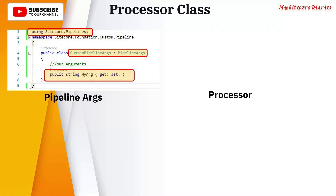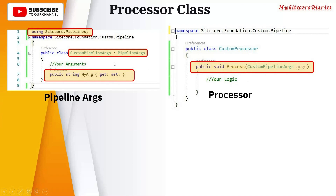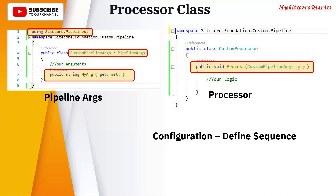Then you can add whatever arguments you want. The processor is defined as the action class. You define your class and in that you create a method called Process. The Process method gets executed when the pipeline is executed. You pass the custom pipeline argument to the processor, and then in Process you write your logic.